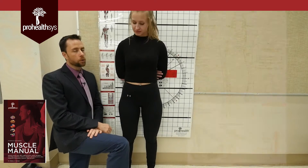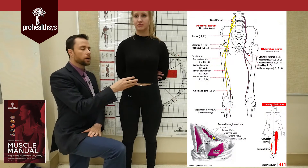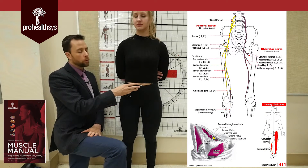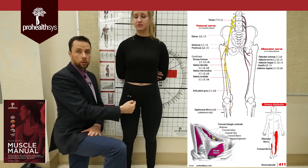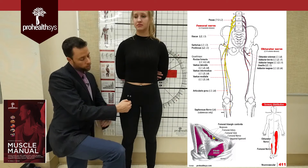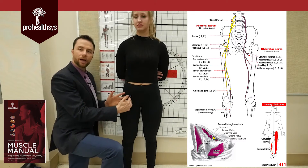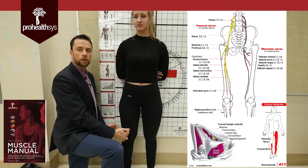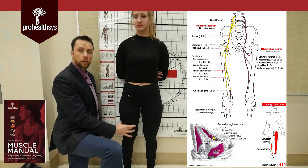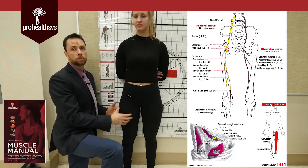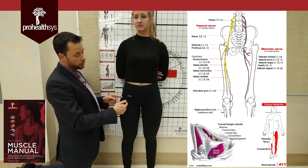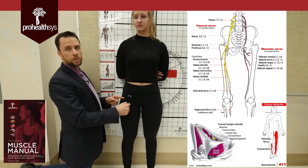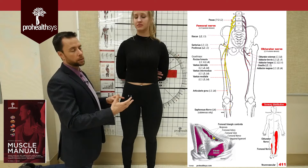We'll start with the femoral nerve. The femoral nerve comes off of spinal levels L2, L3, and L4, runs down and comes through under the inguinal ligament into the femoral triangle, and basically sends branches off all over the front of the thigh. If it is a muscle on the anterior thigh, it's going to be supplied by the femoral nerve — things like vastus lateralis, vastus medialis, vastus intermedius, and rectus femoris.